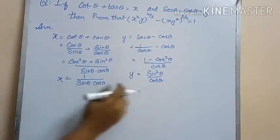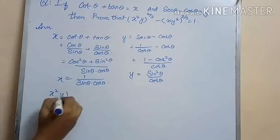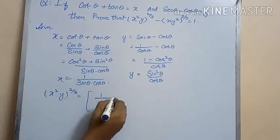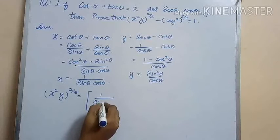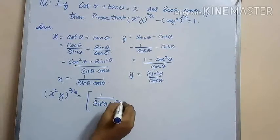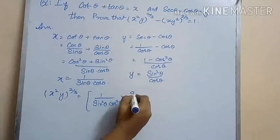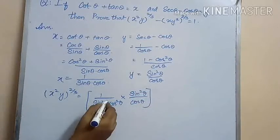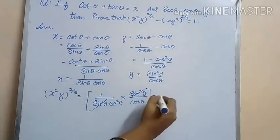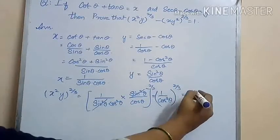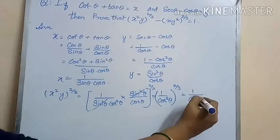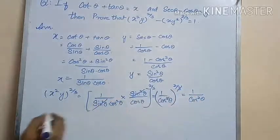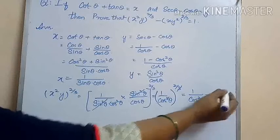These are the values of x and y. Let us find (x²y)^(2/3). x² = 1/(sin²θ cos²θ), multiplied by y = sin²θ/cos θ. The sin²θ gets cancelled, so we get (1/cos³θ)^(2/3), which is 1/cos²θ. Since 3 and 3 cancel, we get (1/cos θ)² = 1/cos²θ. Mark this as equation 1.